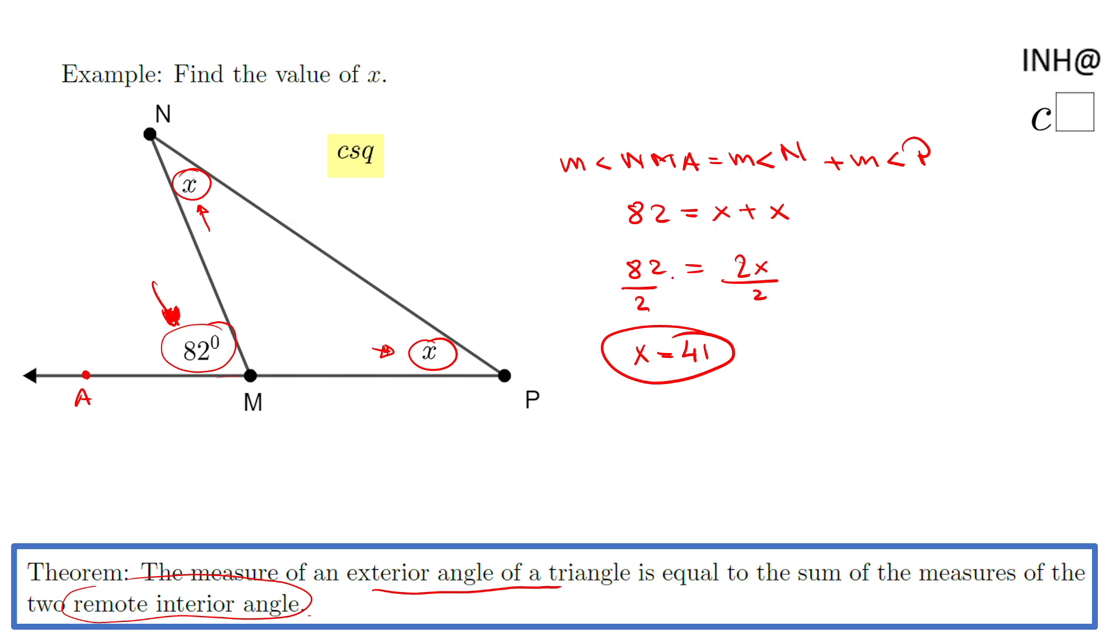So that is the answer for this problem. Of course, if you need to find the measure of angle N, that will be 41 because it's just x. The measure of angle P will also be 41 in case you need it.